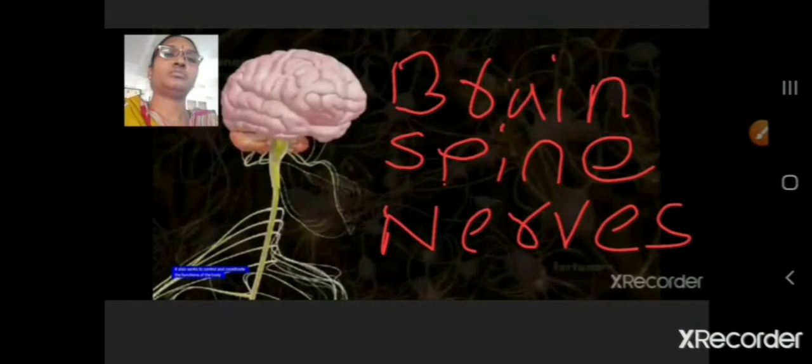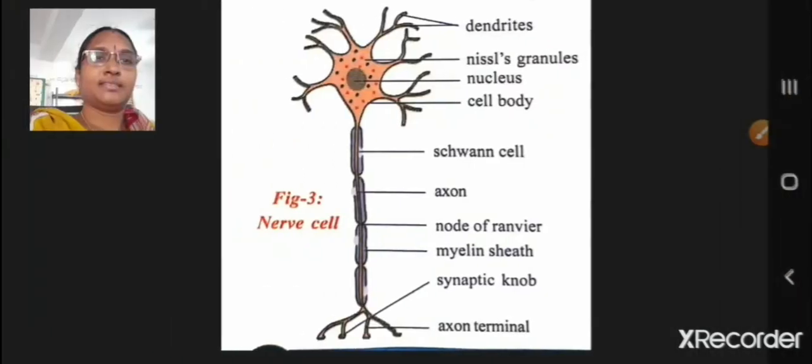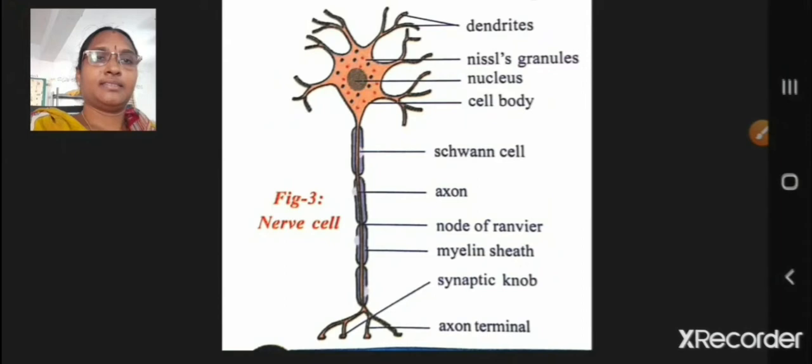Coordination System consists of brain, spinal cord and nerves arising from the brain and spinal cord, and nerve cells or neurons are the structural and functional units of nervous system.